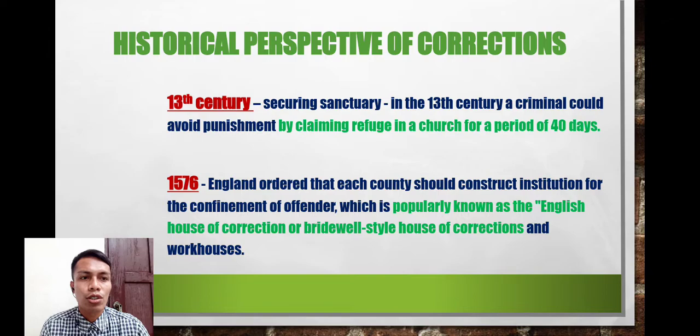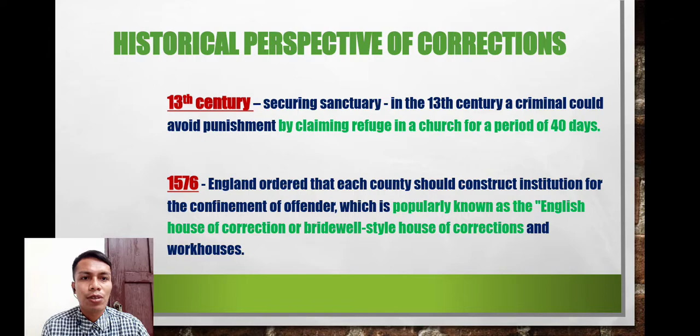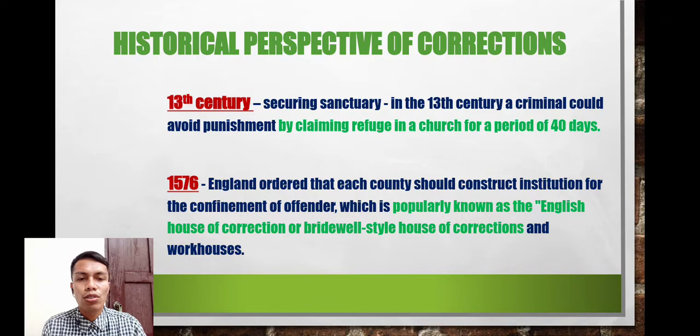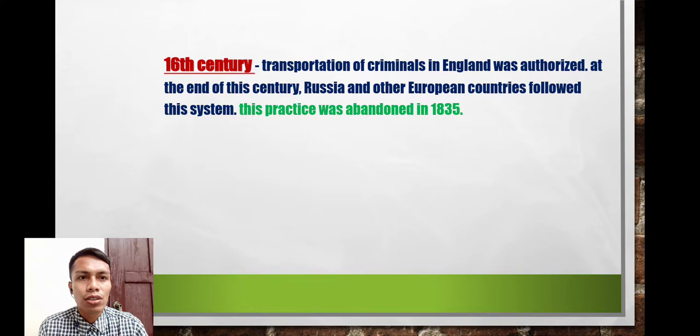In 1576, England ordered that each county should construct an institution for the confinement of offenders, popularly known as the English House of Correction, or the Bridewell-style house of corrections and workhouses. England mandated the construction of these institutions because the number of offenders was increasing and they needed to be housed in proper institutions.